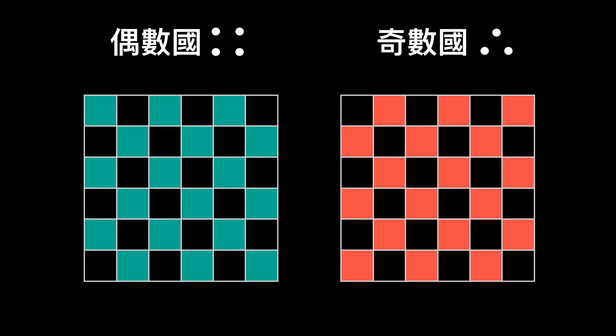In other words, under the rule of walking diagonally, the checkerboard is split into two parts, the even nation and the odd nation. A person in the even nation can never step on the odd nation by walking diagonally, unless we break the rule, allow the person to sidestep.